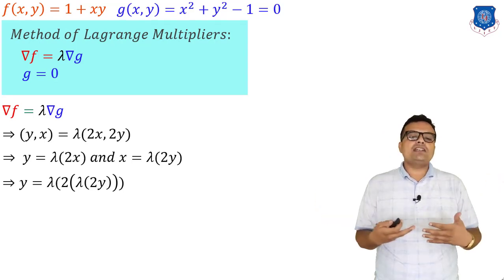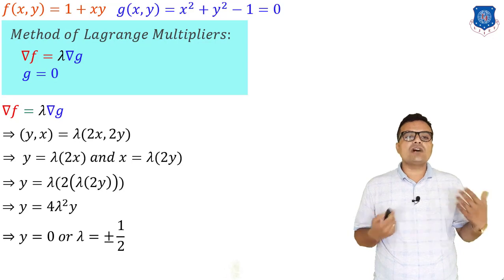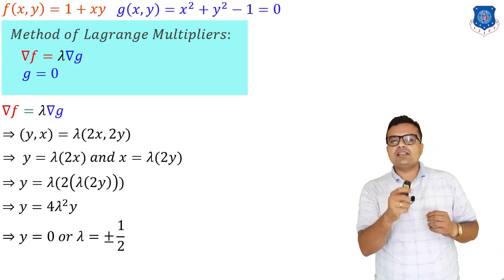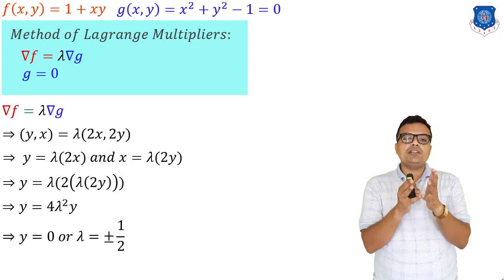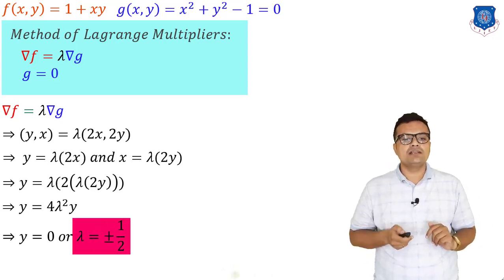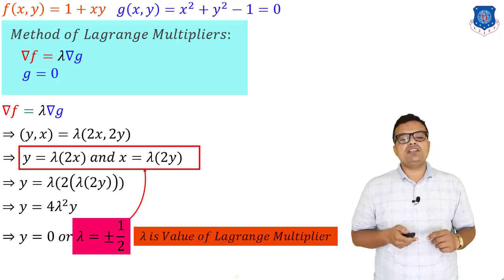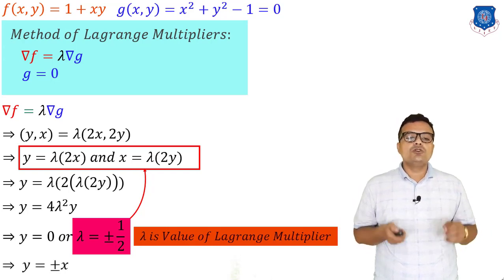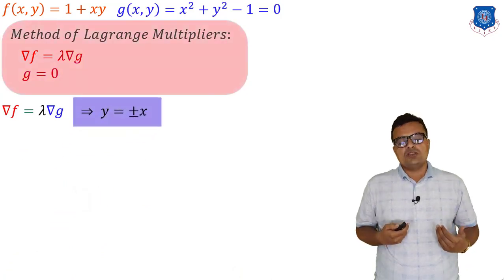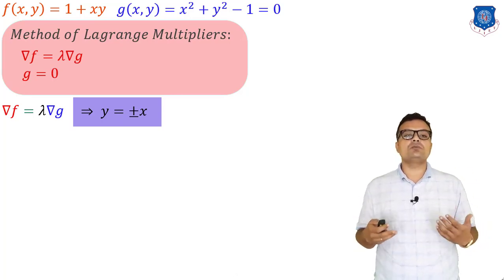Combining these two equations by substituting x into the first equation, we get y = 4λ²y, which means either y = 0 or λ = ±1/2. If y = 0 then x = 0, giving the origin, which is not on our constraint circle, so we ignore that and focus on λ = ±1/2. Substituting this back into our vector equations gives y = +x or y = −x — two different lines. This is the conclusion from the first condition ∇f = λ∇g.